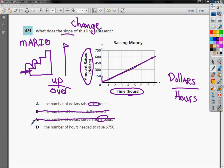And D says the number of hours needed to raise $750. Once again, I'm locked into this numeric value of 750, so slope can't be hindered by numbers, so that's out. So my answer to number 49 is the number of dollars raised per hour, which I can get from the fact that Mario has to go up before he goes over, and because slope, of course, represents change.